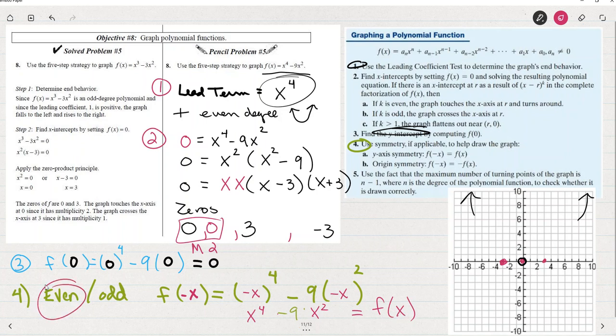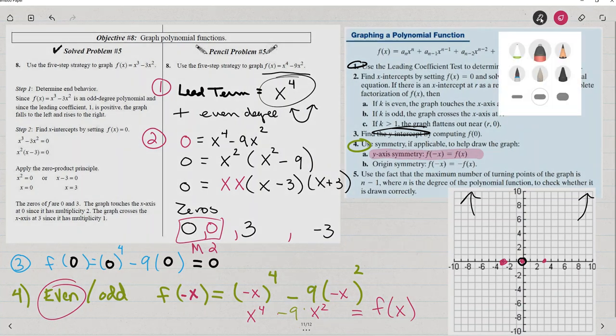f of the opposite of x is equal to f of x. So this is even, meaning there's symmetry here on this axis. The y-axis, everything to the right is going to be the same as what's to the left. We've got y-axis symmetry because the function's even.